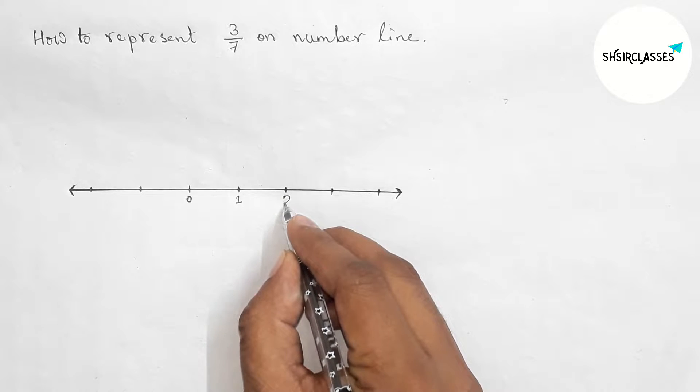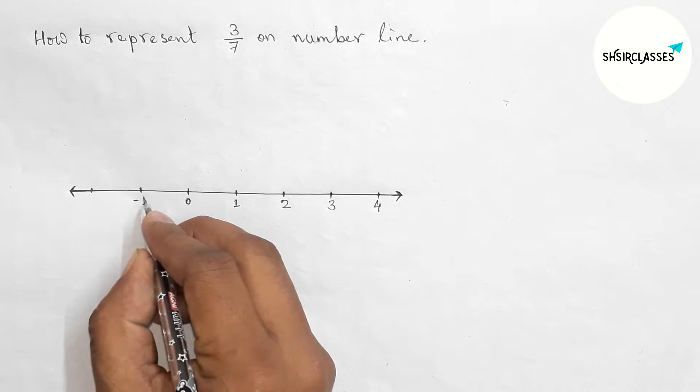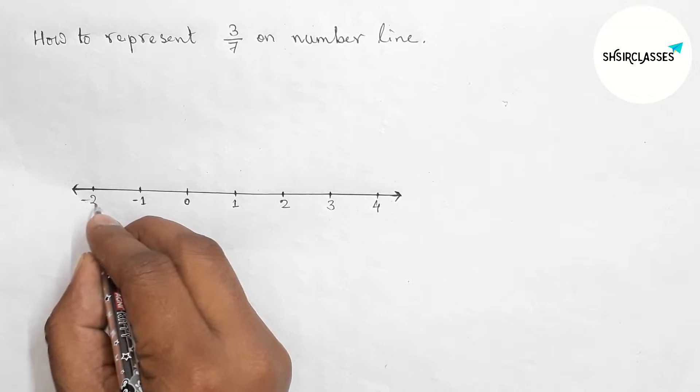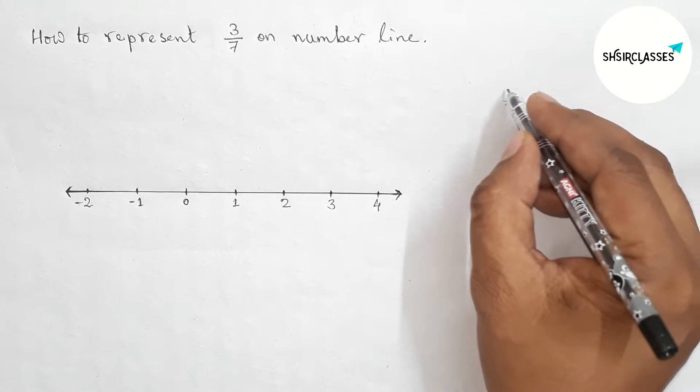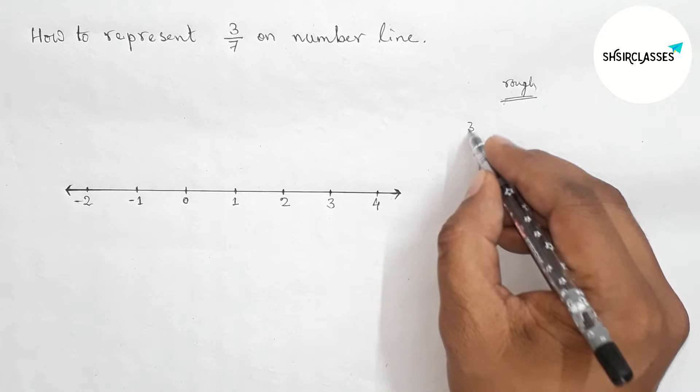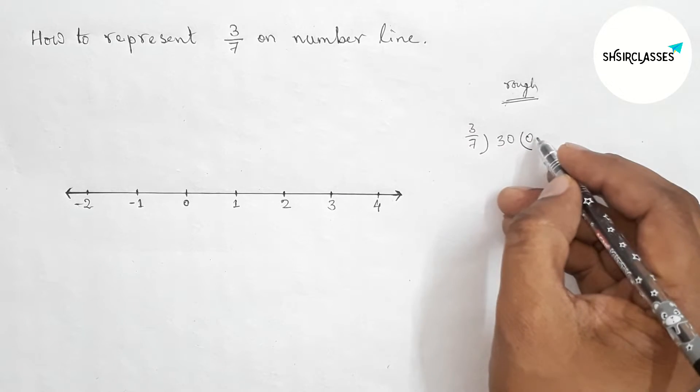Here taking 1, 2, 3, 4 and continuous, and this side minus 1, minus 2. This is a perfect number line. Next, discussing some important calculations. Now finding the value of 3/7 in decimal.